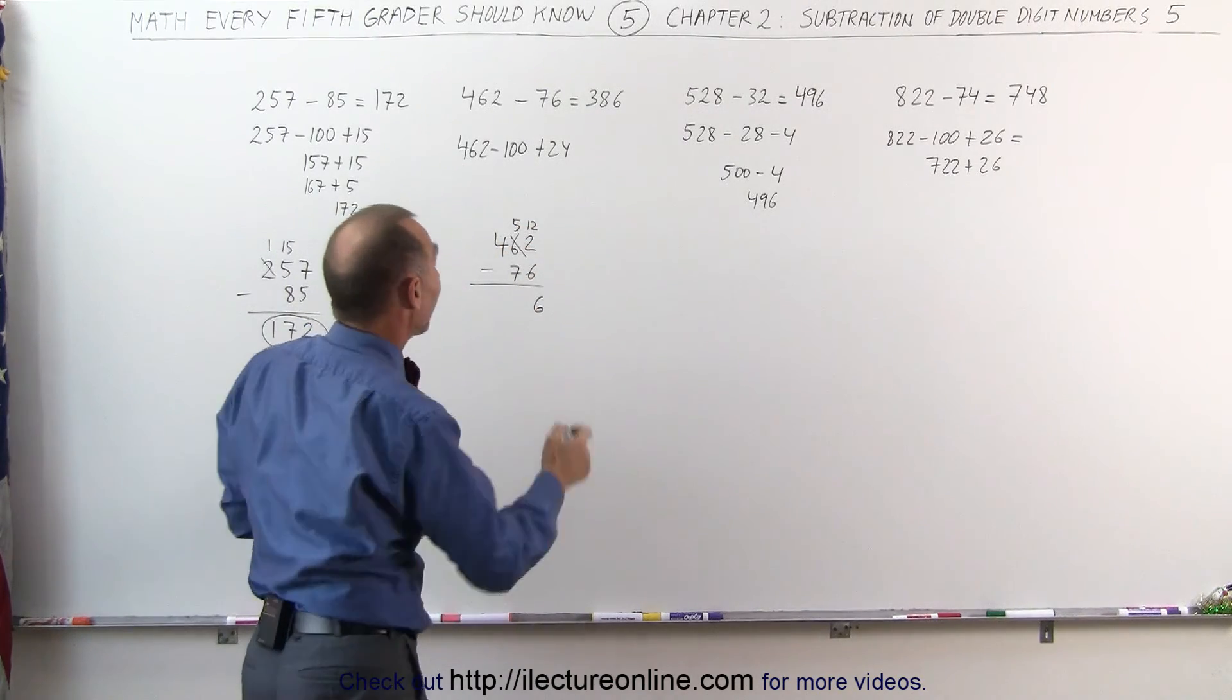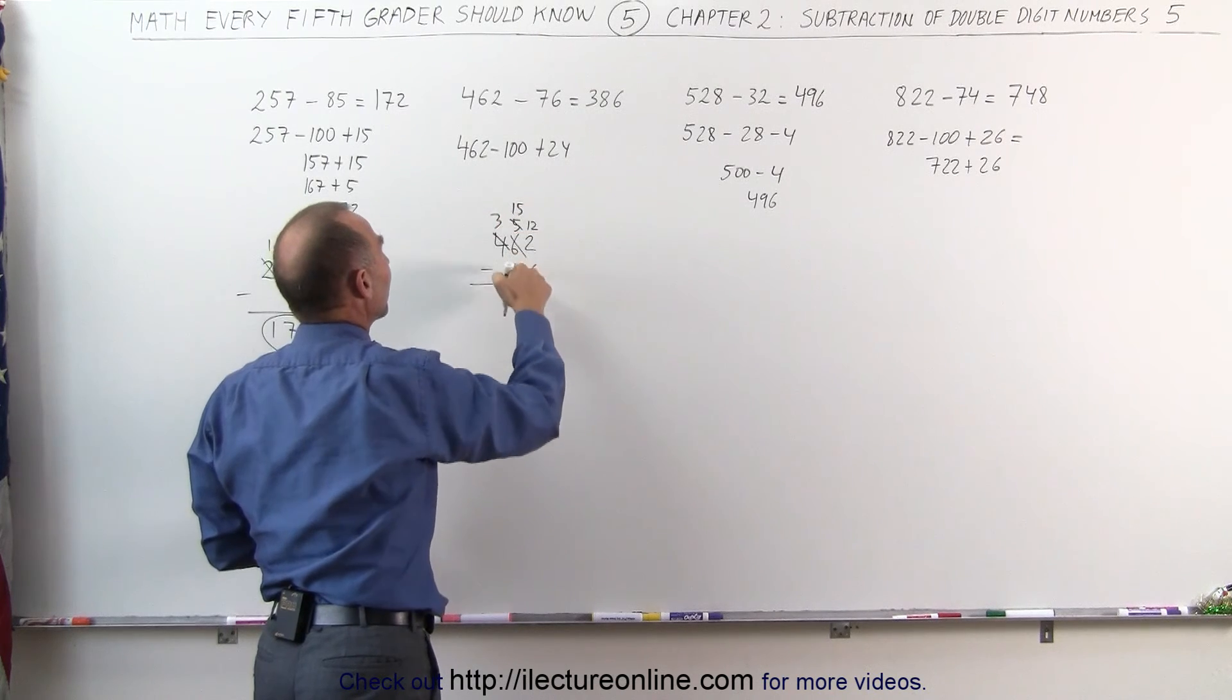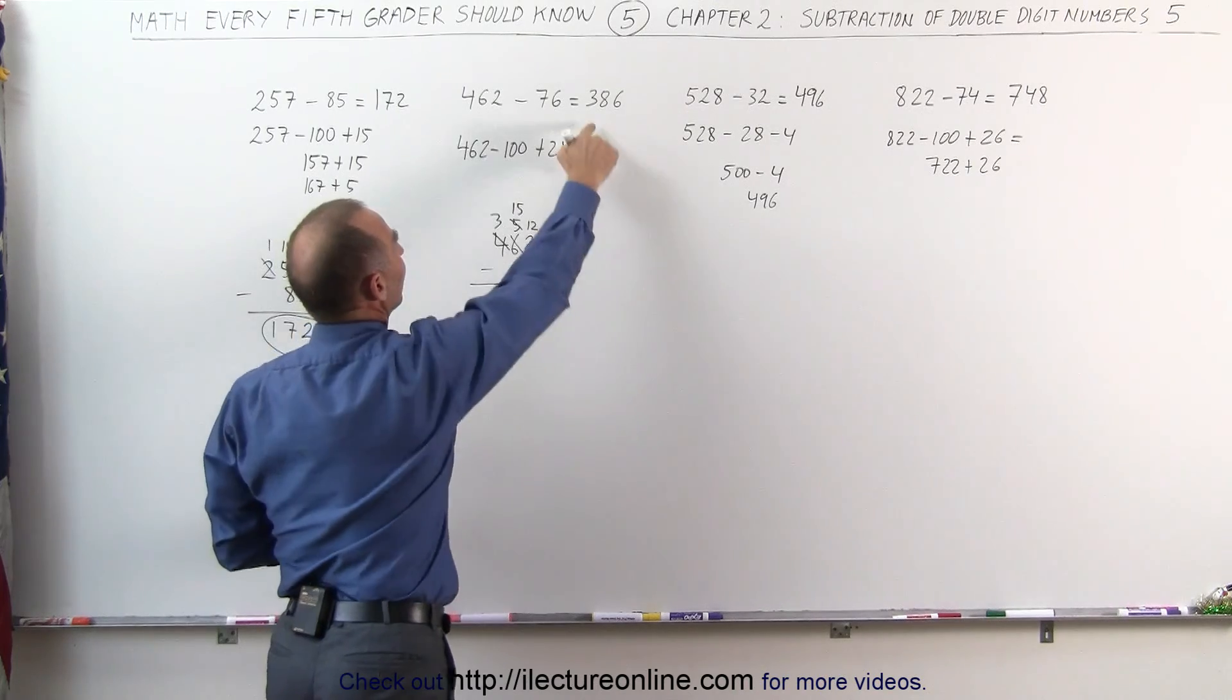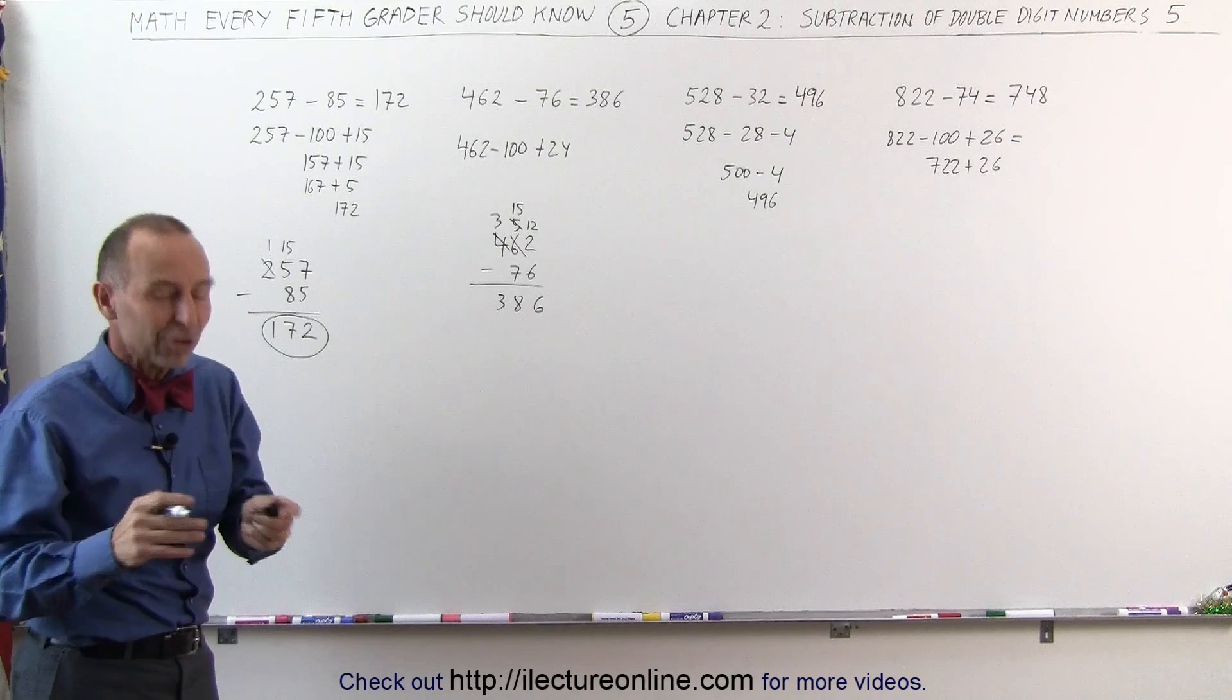5 minus 7, can't do that. I have to go borrow 1. This becomes 3. This becomes 15. 15 minus 7 that gives me 8. 3 minus 0 is 3. 386 is the answer that I was looking for. You can always fall back to the technique that you know how to do.